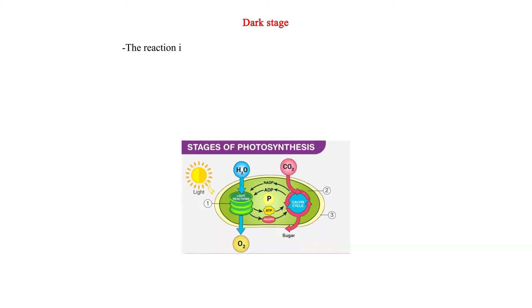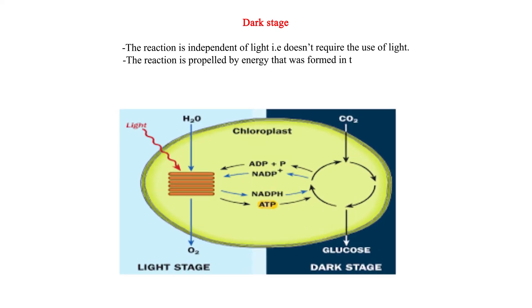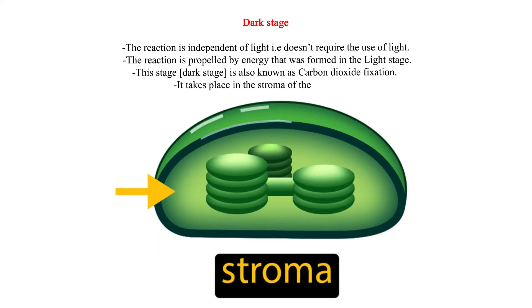The dark stage reaction is independent of light — it doesn't require the use of light. The reaction is propelled by energy that was formed in the light stage. This dark stage is also known as carbon dioxide fixation, and it takes place in the stroma of the chloroplast.